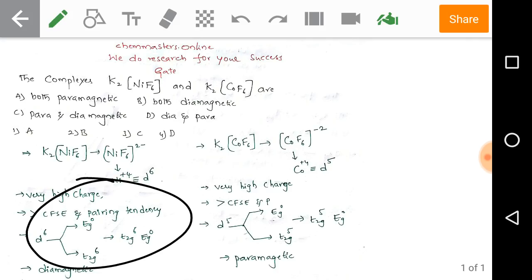There are no unpaired electrons in the nickel +4 complex. Hence, this is diamagnetic in nature.